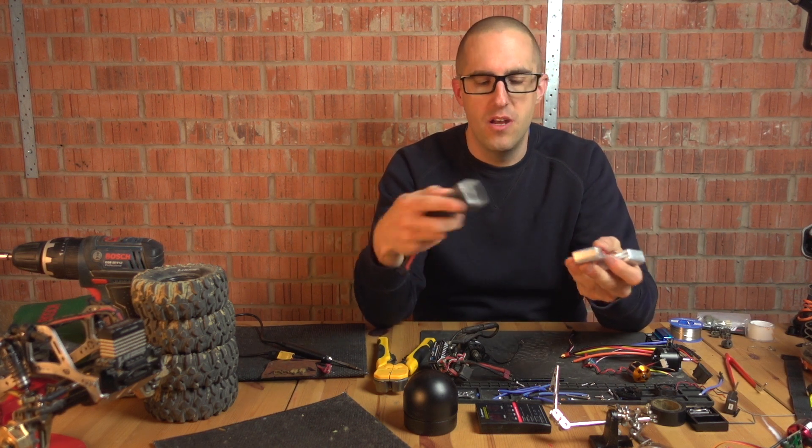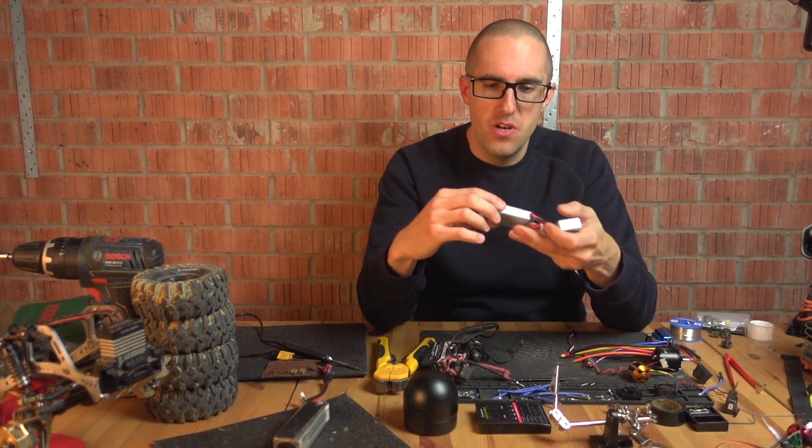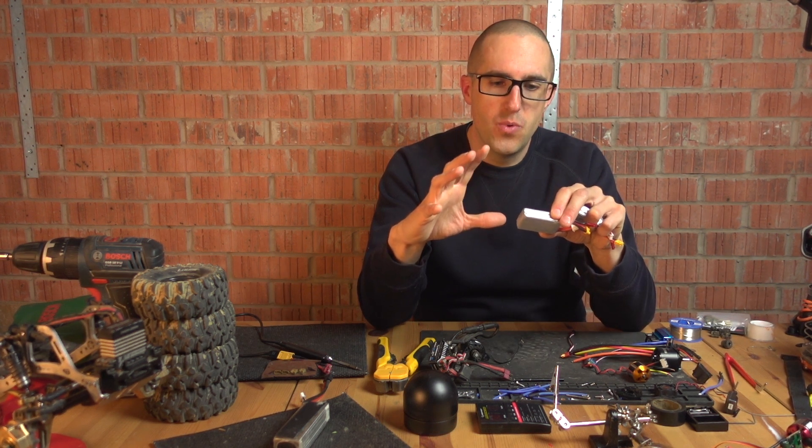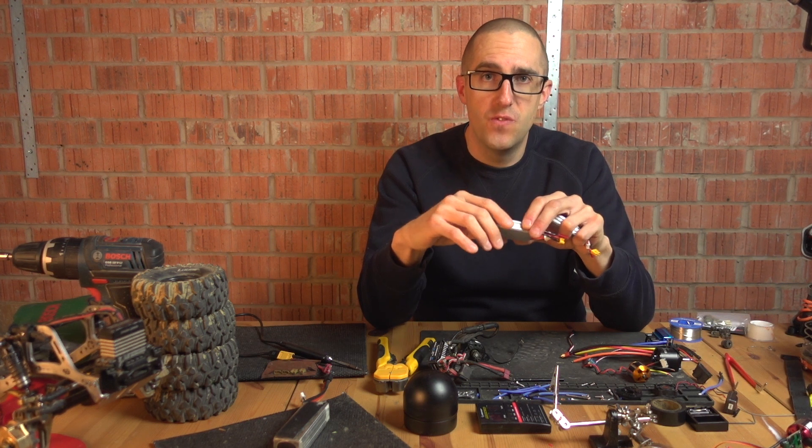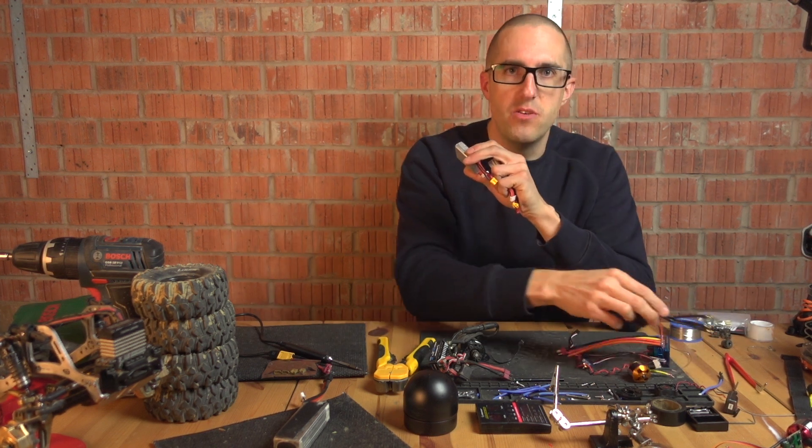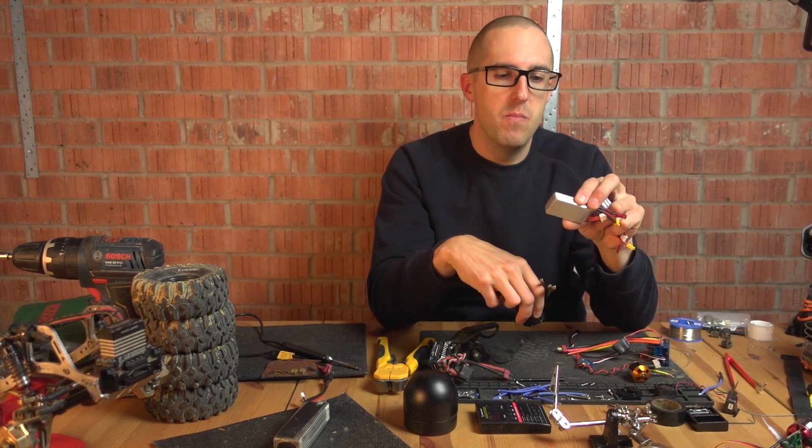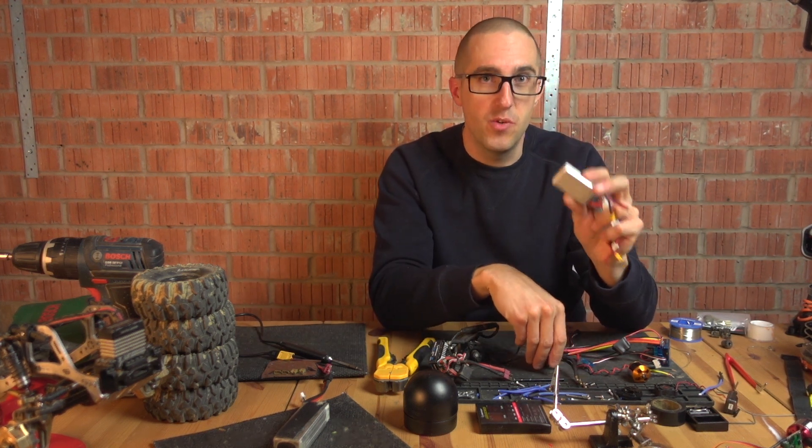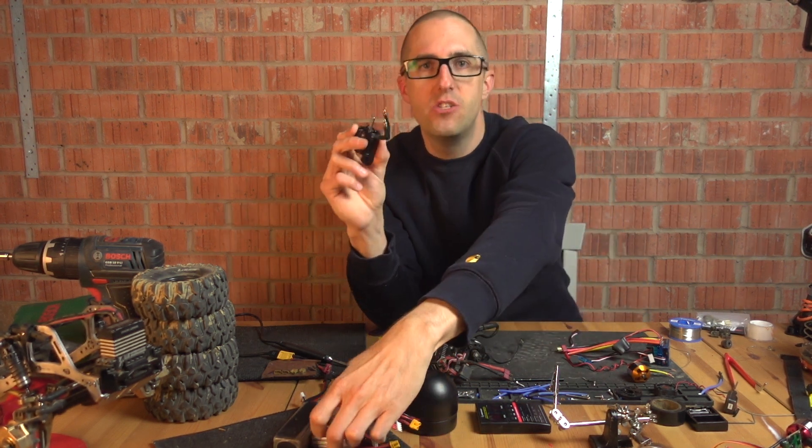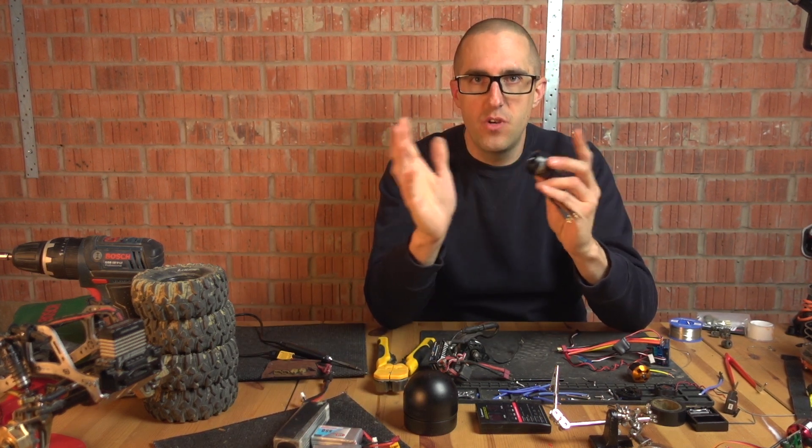They're an 80c discharge with 160c burst which gives me 80 times 0.55 is 44 amps constant discharge, which is enough to run this motor at about half speed constantly. But it also has 160c discharge which is 88 amps, and technically this motor can only draw 72 amps so we've got a bit of a buffer.